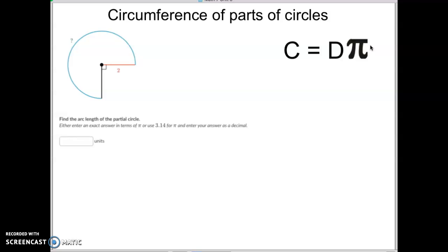You could do circumference equals 2 times the radius times pi, but it's the same thing. So we'll just go with the circumference equals the diameter times pi. So in this one, you know that the radius is 2, so then the diameter would be 4. So that's pretty simple.